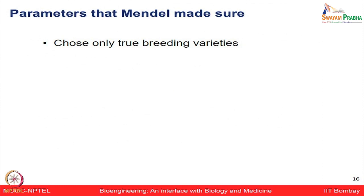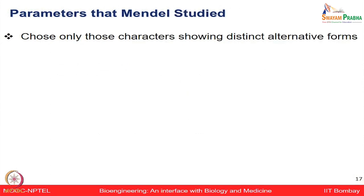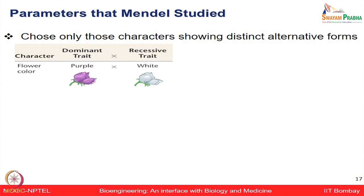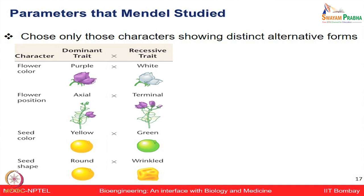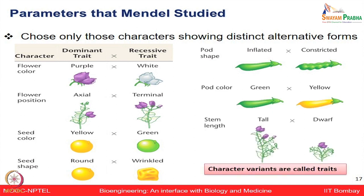He chose only true breeding varieties, crossing them over multiple generations and only selecting those showing the same pattern. He selected only one characteristic at a time which had distinctive alternative forms — for example, purple versus white flower color, flower position (axial or terminal), seed color (yellow or green), seed shape (round or wrinkled), pod shape (inflated or constricted), pod color (green or yellow), or stem length (tall or dwarf).